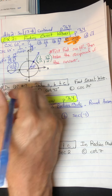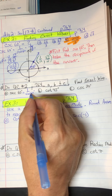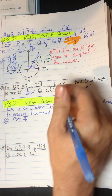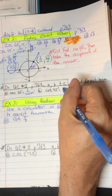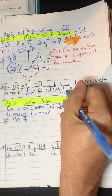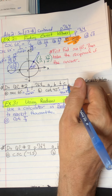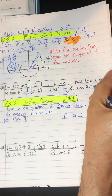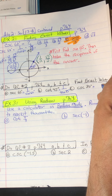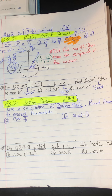For quick check 2: for secant, find 1 over cosine of 60 degrees — find the cosine of 60 degrees (the x-coordinate) on the unit circle, then take the reciprocal. For cotangent, find 1 over tangent of 45 degrees — we already found tangent of 45 degrees back in section 13-6, so just take the reciprocal. For cosecant, find 1 over sine of 30 degrees. They want exact answers, not decimal approximations.